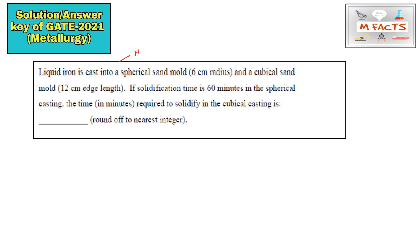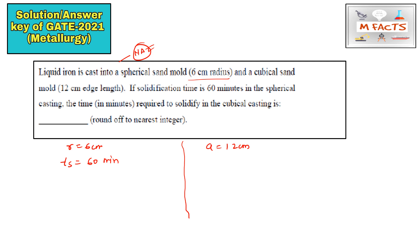This question is an NAT (Numerical Answer Type) and in GATE 2021 you will find mostly NAT-type questions, which makes it a little tough because people may make silly mistakes. The problem: liquid iron is cast into a spherical sand mold of radius r = 6 cm, and a cubical sand mold with side a = 12 cm. The solidification time for the spherical casting, t_s, is given as 60 minutes.